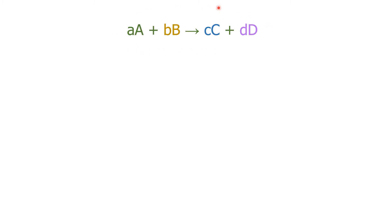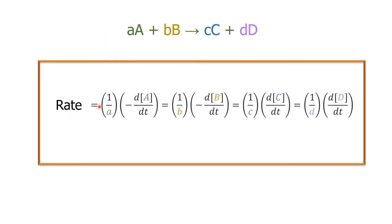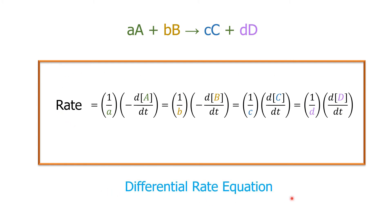In general, if we have the following equation, we can write down the rate of reaction as follows: rate equals 1 over a — the stoichiometric coefficient for A — multiplied by the rate of consumption of A, equals 1 over b — the stoichiometric coefficient for B — multiplied by the rate of consumption of B, equals 1 over c — the stoichiometric coefficient for C — multiplied by the rate of formation of C, equals 1 over d — the stoichiometric coefficient for D — multiplied by the rate of formation of D. This equation is what we call the differential rate equation.